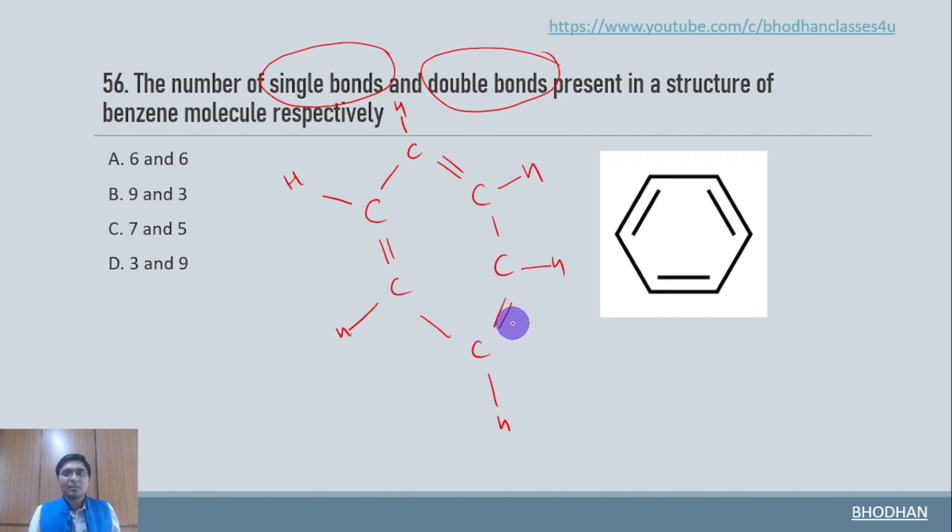So here the question is number of single bonds and number of double bonds. Let us count number of single bonds in the benzene molecule. One, two, three, four, five, six, seven, eight, nine. So we have got nine single bonds. One, two, three. There are three double bonds. So the correct option is B.